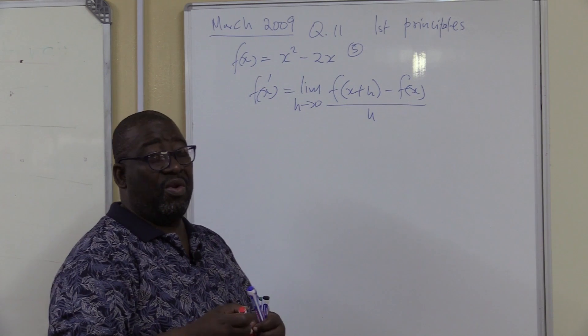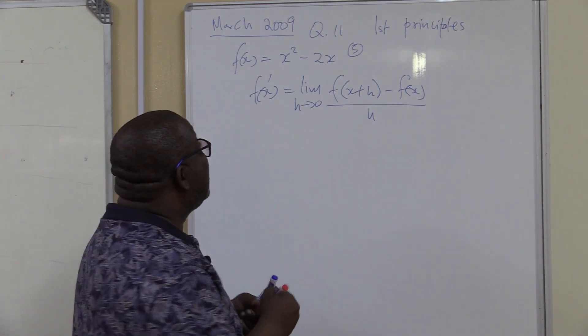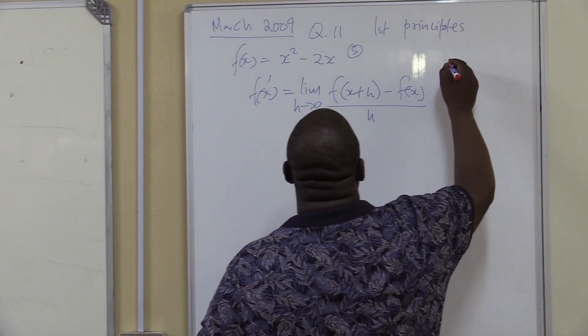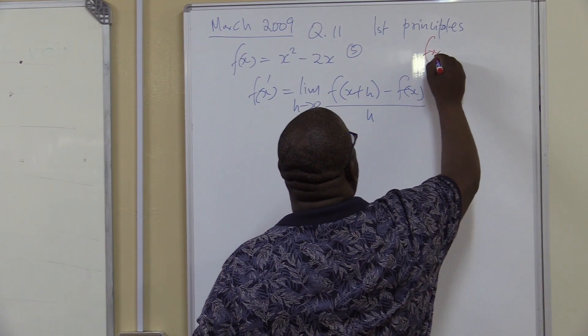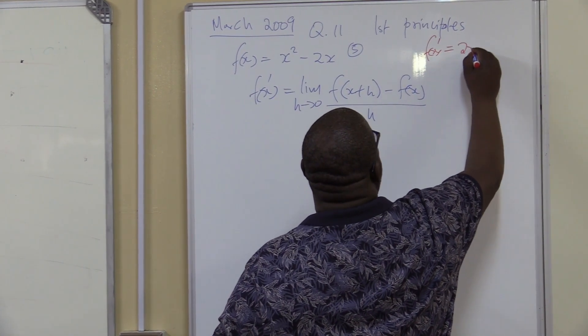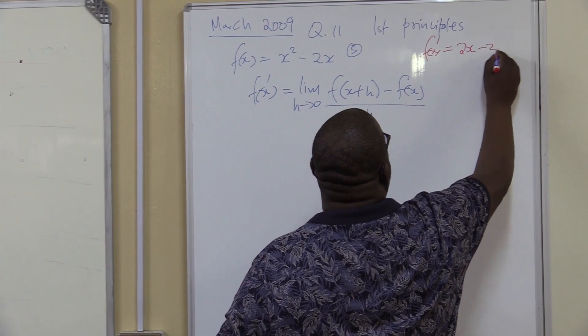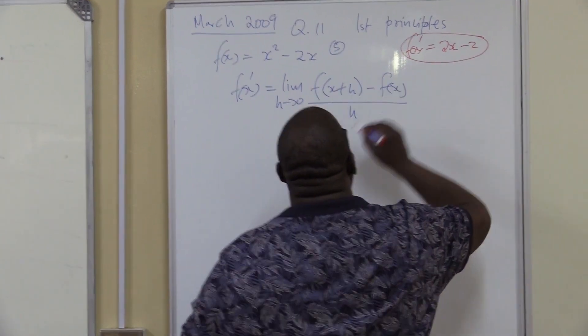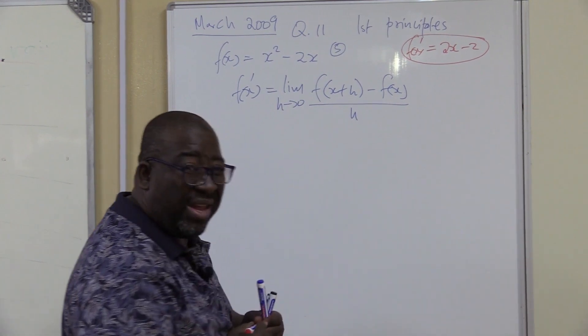Remember, you can see the answer before you even solve it. So the answer that you must get in this problem is f'(x) must equal, let me work it out, it should be 2x minus 2. This is the answer that you must get if we are moving correct. Let's work it out.